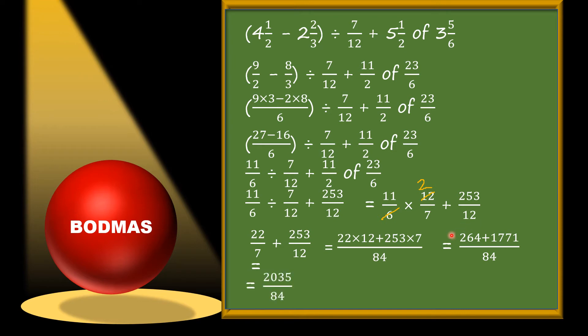We add this and get 2035/84. It is an improper fraction because the numerator is greater than the denominator, so we convert it into a mixed fraction. The answer is 24 and 19/84. Simplification is really very easy — we just follow the steps. Focus on BODMAS and let us solve one more question.